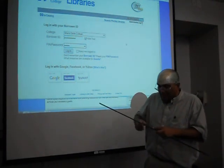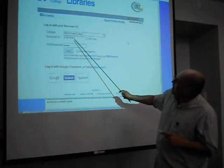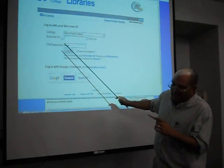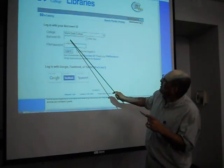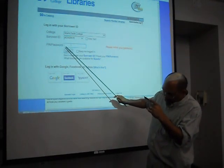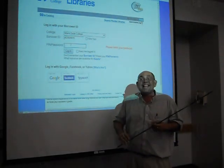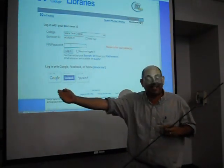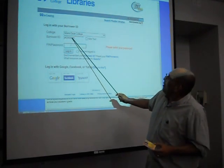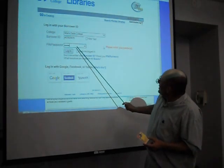So let's erase the borrower ID that's there and type in mine, which is V62926870. Now, the PIN number is simply the last four digits of that same number. So if you have your employee number or your student number, mine ends in 6870, so my PIN would be 6870. Let's go ahead and login.